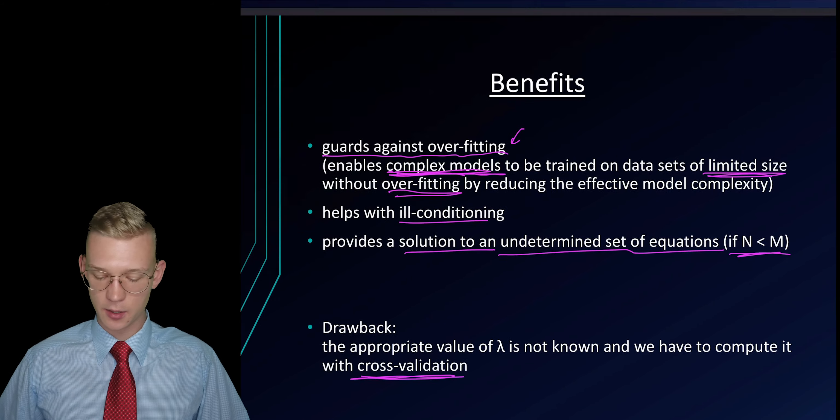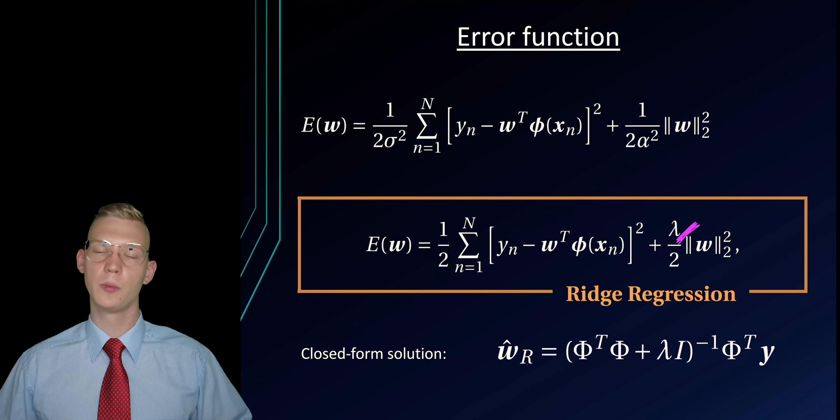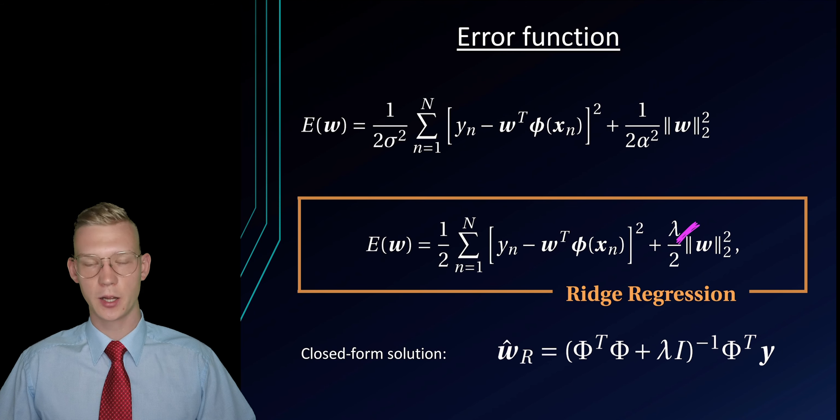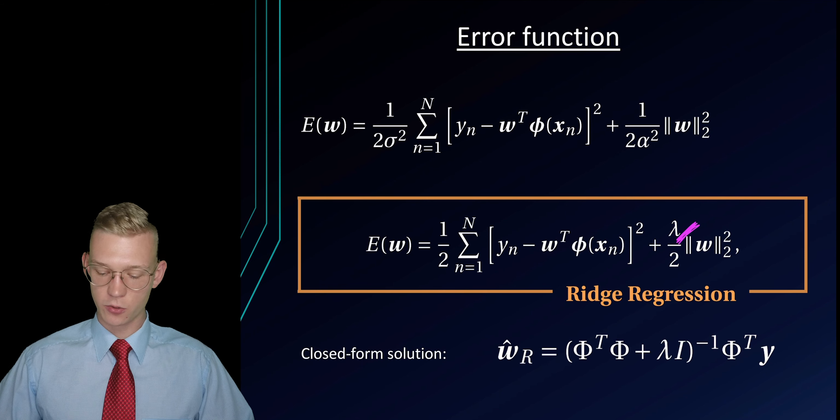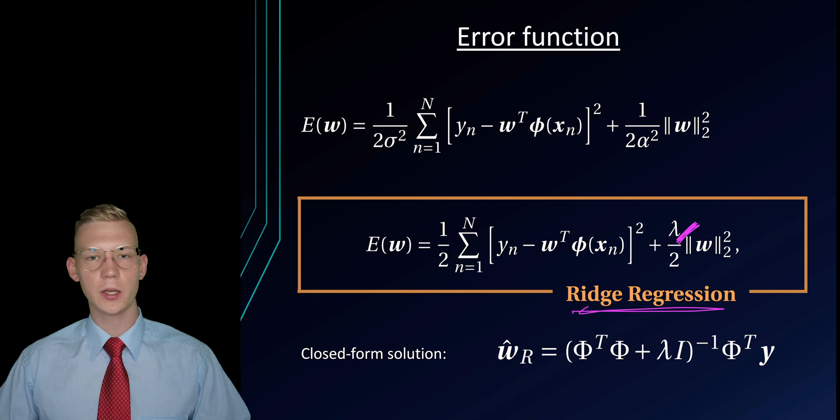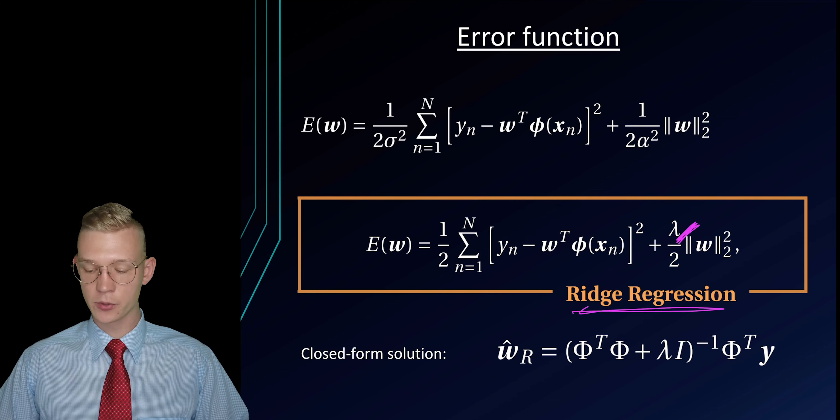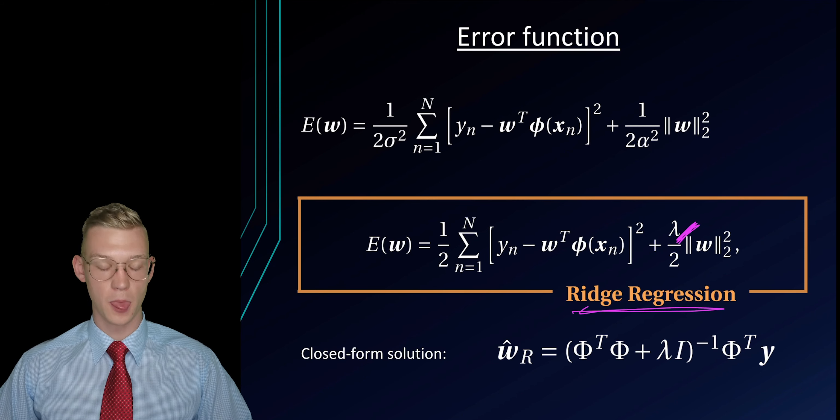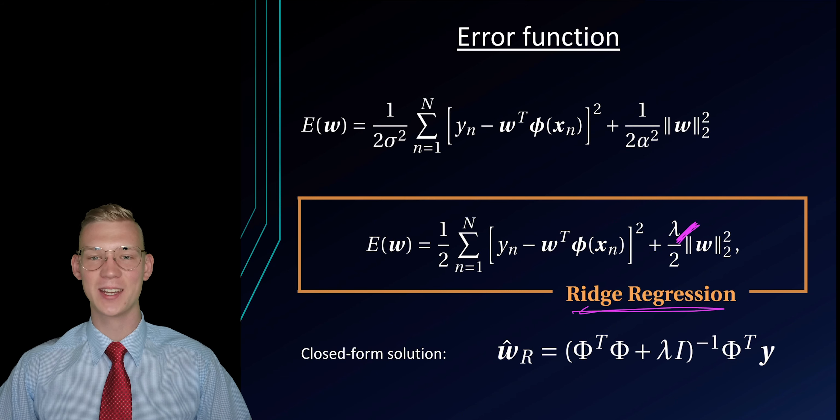But the problem is how do we get that lambda? This will be determined by, for example, cross-validation or trial and error. I hope this video gave you a better understanding regarding ridge regression. If you have any questions regarding the derivation or any tasks or examples, feel free to ask them in the comments down below. Thank you very much for your attention and I'll see you in the next video.